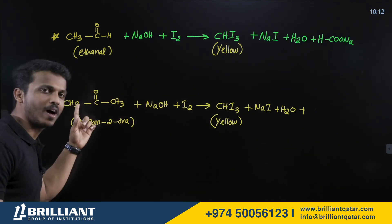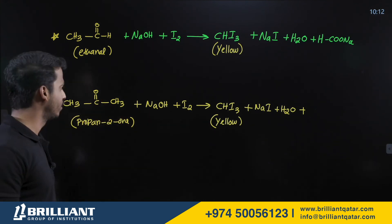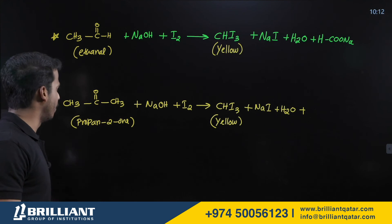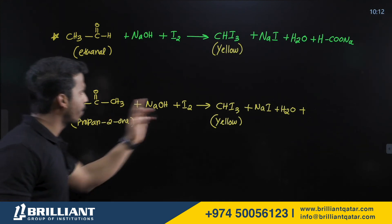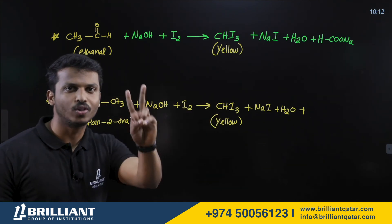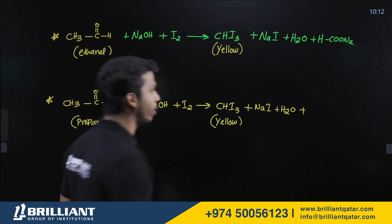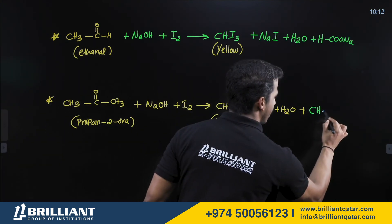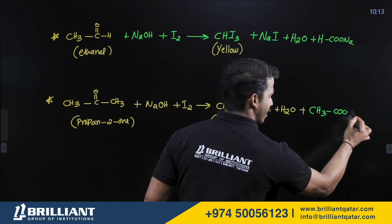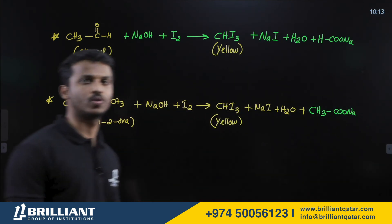For propanone (CH₃COCH₃): three carbons in the reactant, one carbon in iodoform, so two carbons are missing. The two-carbon acid is ethanoic acid (CH₃COOH), but written as its sodium salt — sodium ethanoate (CH₃COONa).